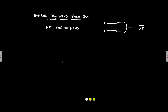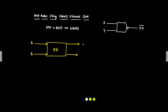We have to implement a half adder using the NAND universal gate. First, the block diagram of the half adder: we have the half adder with two inputs — the two bits to be added, A and B — and two outputs. One is the Sum, given by A-bar·B + A·B-bar, and the other is the Carry, which is simply A·B.